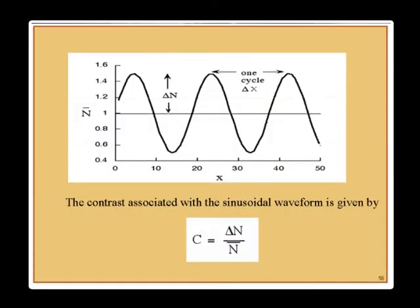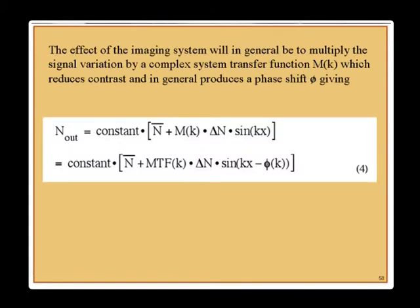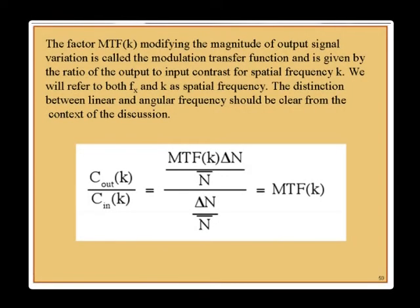The contrast associated with the sinusoidal waveform is delta-N, which is the height of the sinusoid above the mean divided by the mean. We have contrast transfer functions: N-sub-O equals a constant times N-bar (the DC part) plus MTF(K) times delta-N times sine(KX plus phase). The factor MTF(K) modifies the magnitude of the output signal, and it means the ratio of output to input contrast as a function of spatial frequency K.